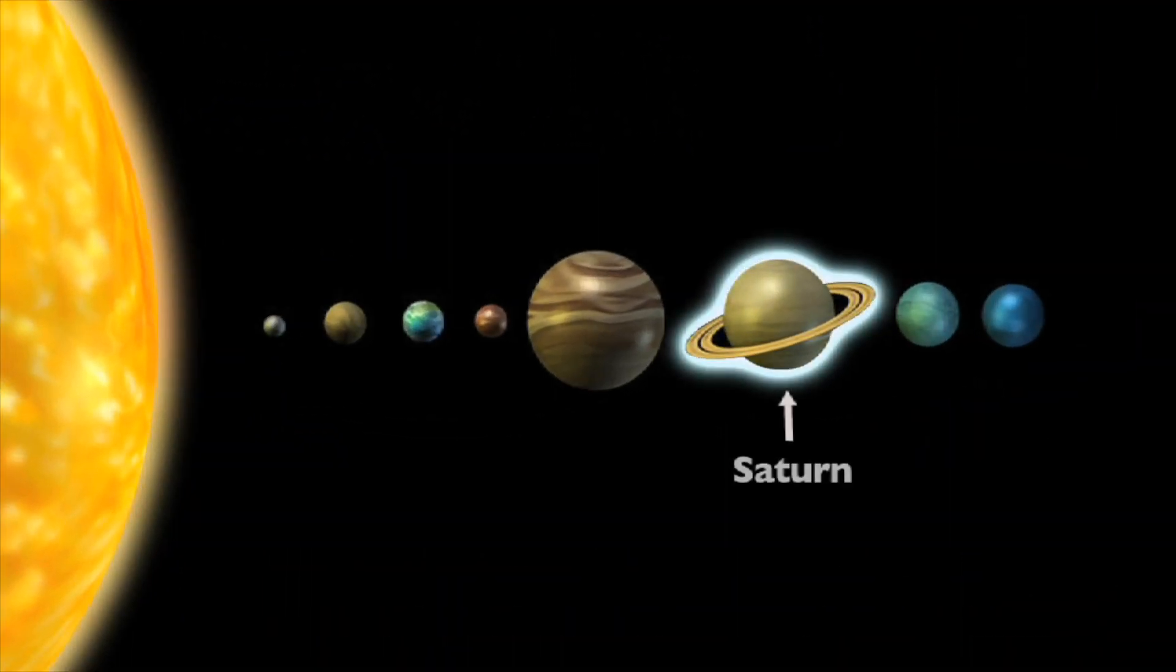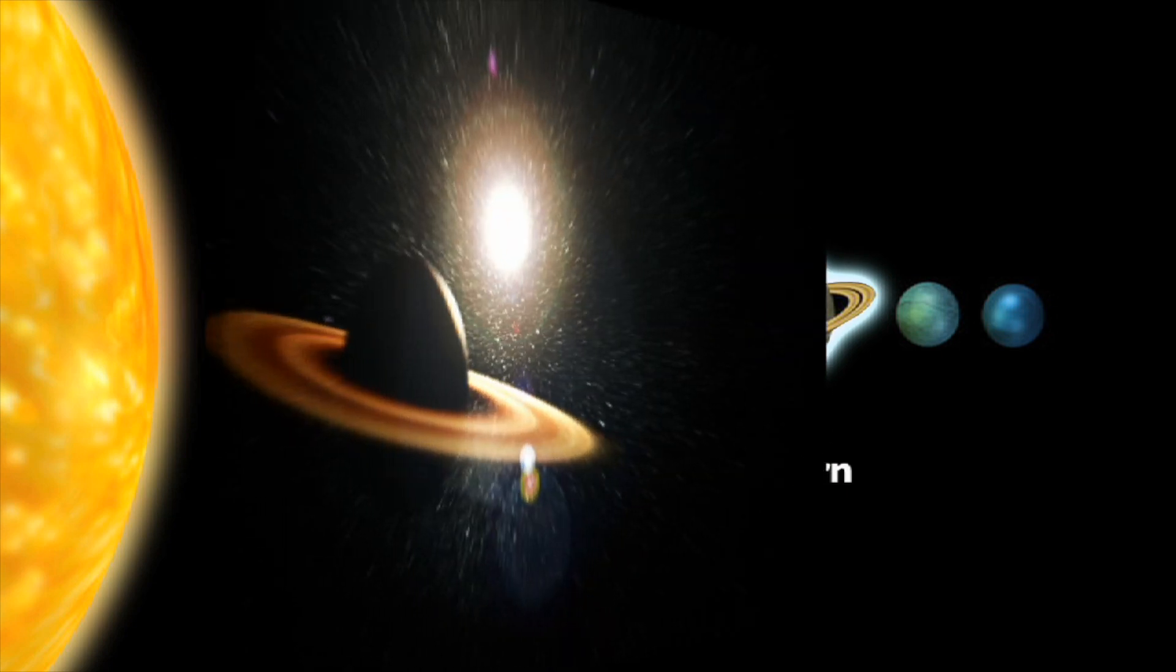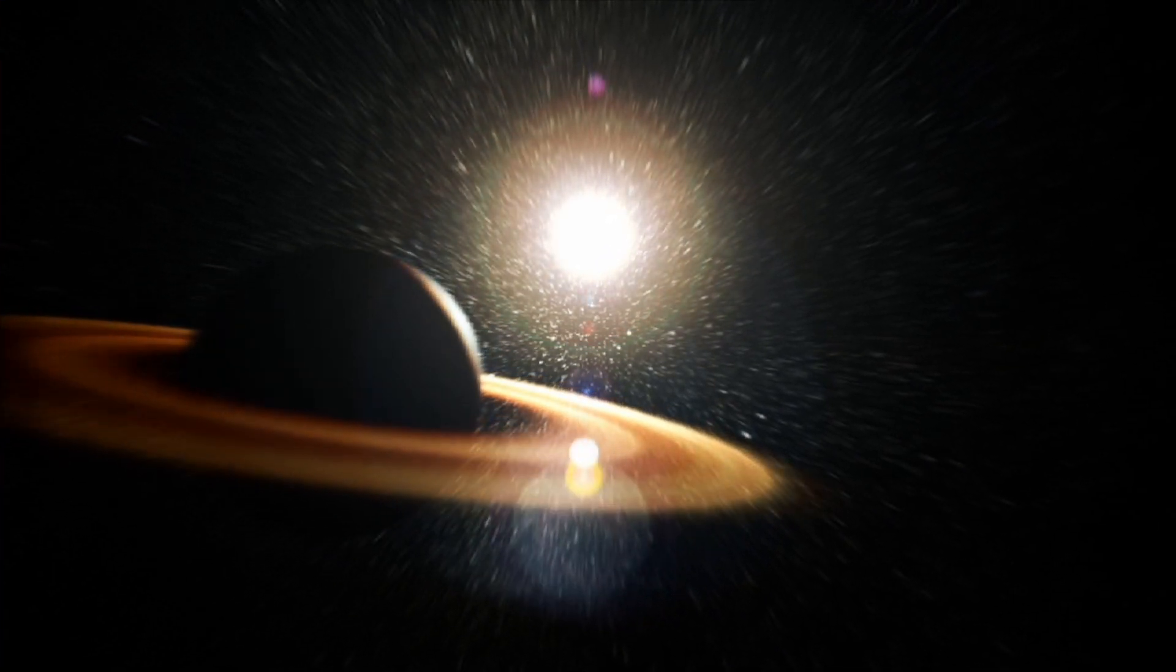Saturn is the sixth planet from the sun and the second largest planet in our solar system. It is also one of the most striking planets because of its spectacular ring system that stretches out into space thousands of miles.